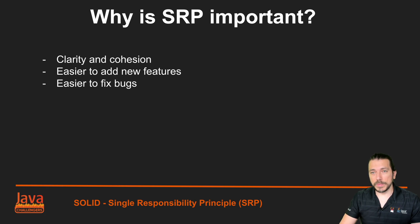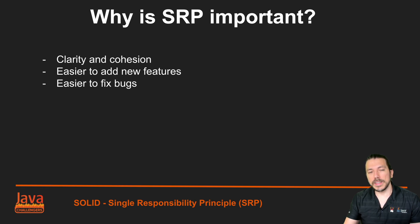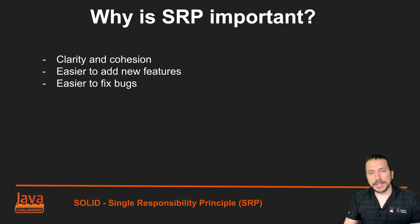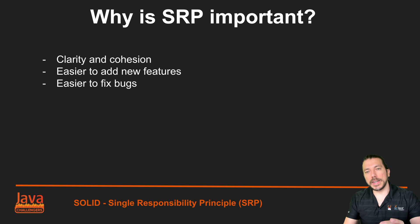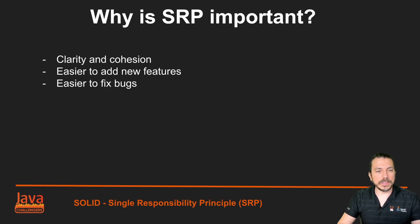Every code, every software needs maintenance. Writing the code for the first time is easy, but maintaining it is a lot more difficult, because we take approximately 10 times more to read code than to write code. That's why it's important to use the SRP principle. There will be bugs, there will be new features to add, and by applying these principles it's going to be easier to fix bugs. You can solve one bug in one specific method and have a specific test to test your one feature, which makes your code and software more maintainable.